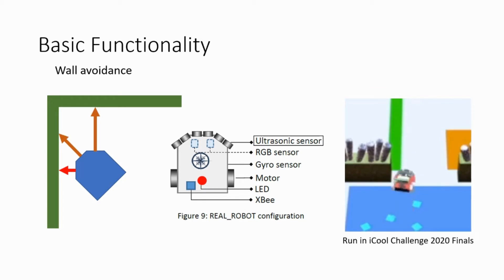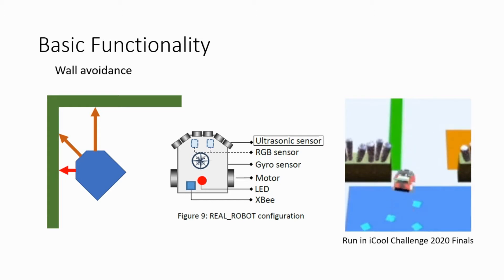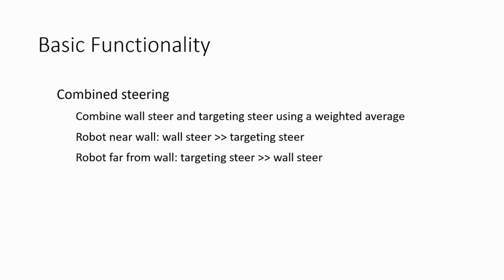We set the wall steer term to be negatively related to the smallest ultrasound reading. The direction of turning depends on whether the left or right ultrasound sensor is closer to the wall. We combine wall steer and targeting steer using a weighted average. When the robot is very near a wall, the wall steer is large, as the priority is to move away from the wall to avoid collision. Otherwise, when the robot is far from the wall, the priority is to move closer to the target grid, so the targeting steer will be large.